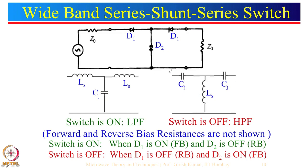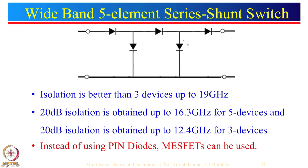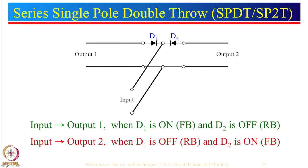We also looked at 3-element and 5-element PIN diode switches. Today we discuss the next configuration: series single pole double throw, abbreviated SPDT or SP2T. The input is given at one port and may go to output 1 or output 2 depending on how diodes D1 and D2 are biased. When D1 is forward biased and D2 is reverse biased, input goes to output 1. Please ensure both diodes are not on simultaneously, as that would act more like a power divider network.